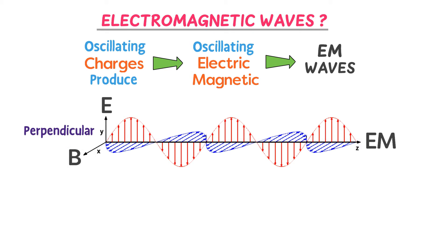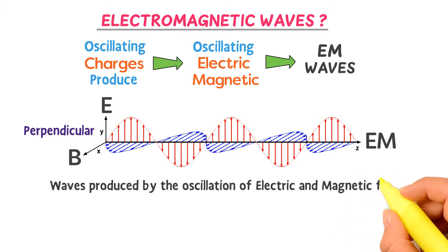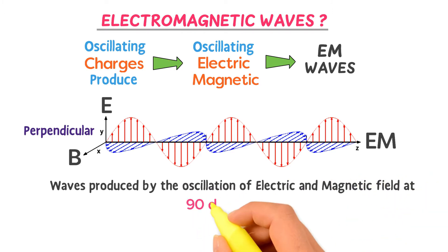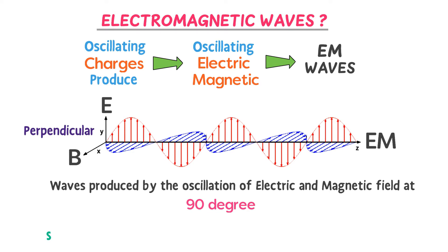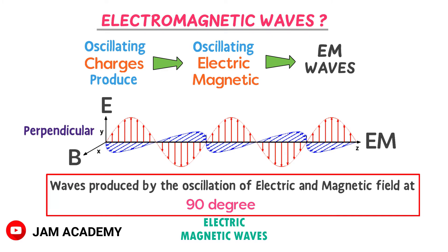Therefore, we define electromagnetic waves as: waves produced by the oscillations of electric field and magnetic field at 90 degrees are called electromagnetic waves, or EM waves.